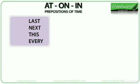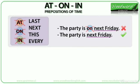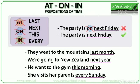With the words last, next, this, and every, we do not use a preposition — not at, on, or in. So we don't say the party is on next Friday; we say the party is next Friday. Examples: They went to the mountains last month. We're going to New Zealand next year. He went to the gym this morning. She visits her parents every Sunday.